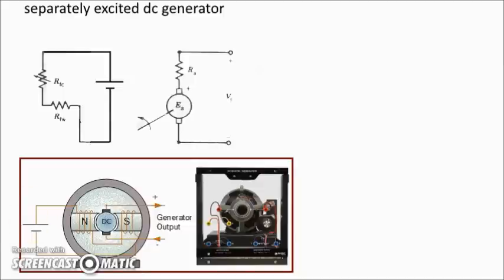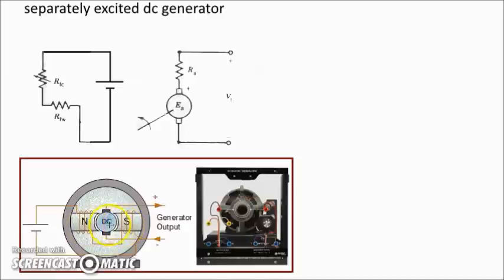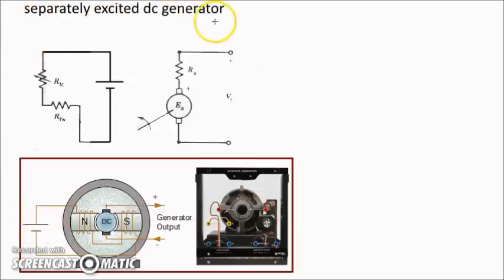This is a picture of the machine we use in the lab. On the left side we see a block diagram of this generator. For simplicity, I just have two poles here, but in reality we have four poles for this particular machine. The field windings are connected to an external power supply for a separately excited DC generator.